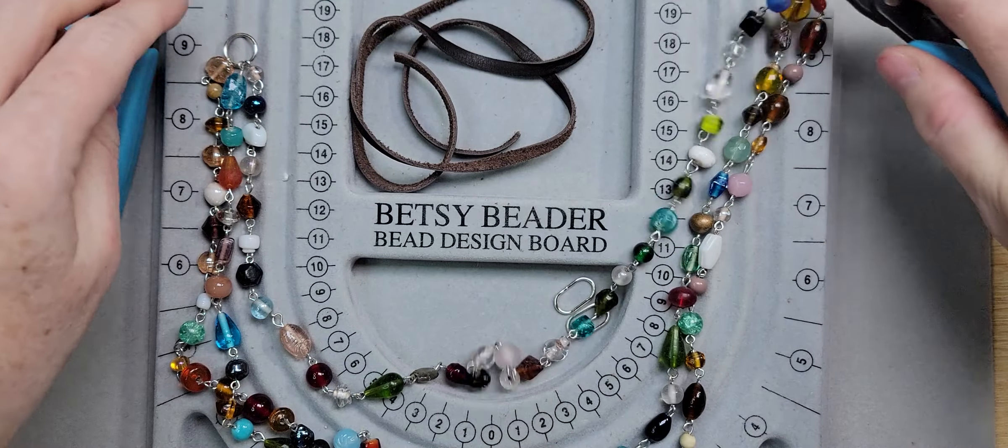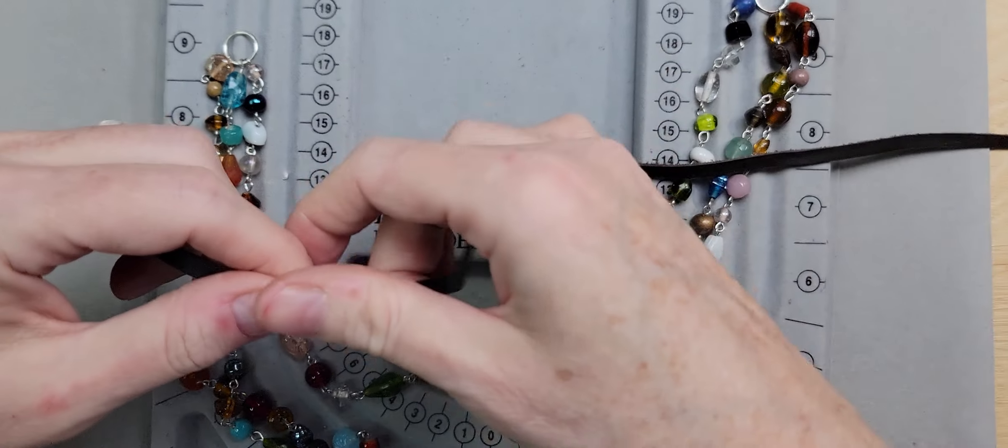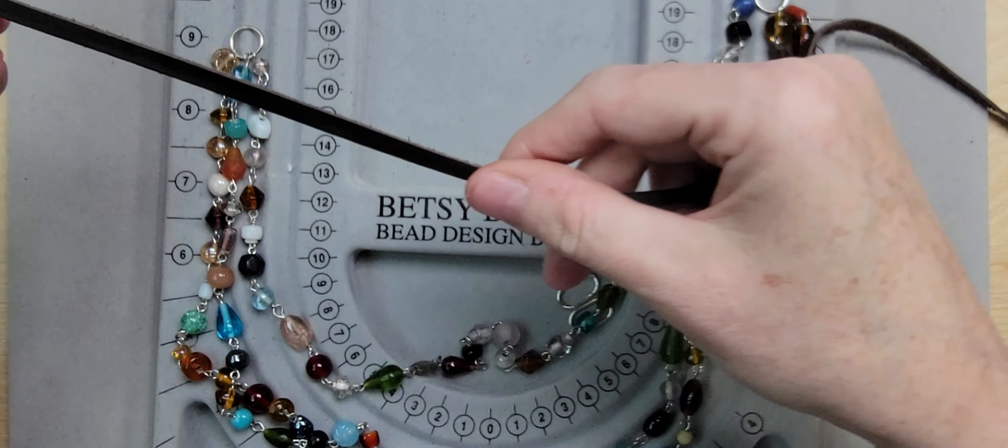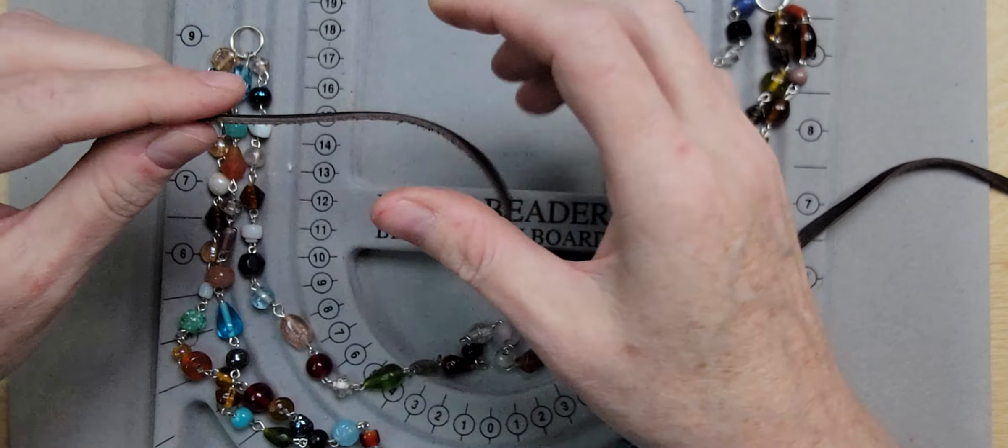I'm going to lay those out there on the board and I'm going to come in with the five millimeter leather lace cord. This comes in a lot of colors. It's very soft, so it's very comfortable against the neck.